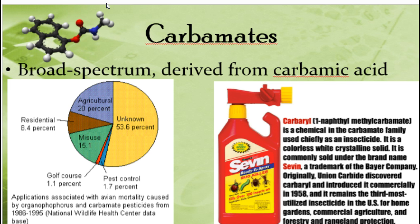Our third group of insecticides is carbamates — broad spectrum insecticides derived from carbamic acid. They're generally not as toxic to mammals as organophosphates, but they will still show broad spectrum non-target toxicity.